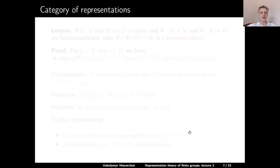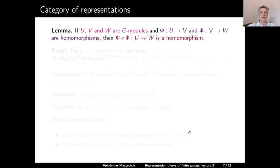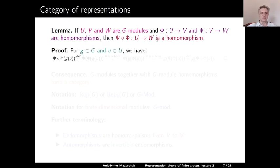Now we can talk about the category of representations. Let U, V, and W be G-modules. If Φ: U → V is a G-module homomorphism and Ψ: V → W is a G-module homomorphism, then the composition Ψ∘Φ is a G-module homomorphism from U to W. Let us prove this lemma. Let g ∈ G and u ∈ U, and let us compute the image of g·u under Ψ∘Φ.